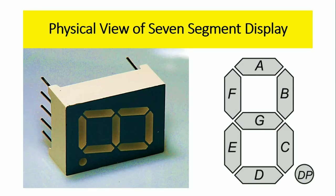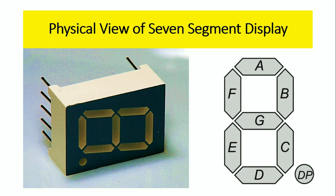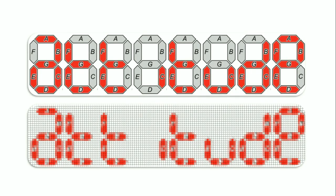Here is the physical view of the seven segment display. We have seven segments: one, two, three, four, five, six, and seven. Additionally, a dot point is provided, so there are eight segments total, but majorly we use seven segments — that is why we call it a seven segment display.